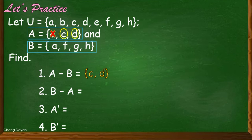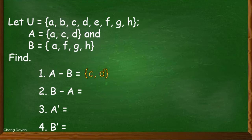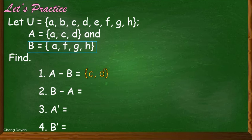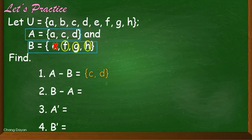Next, let us have the difference between B minus A. We identify those elements that are present in B but not in A. We need to exclude the elements present in both A and B, which is A. Our remaining elements are F, G, H — these three are present in set B but not in A.